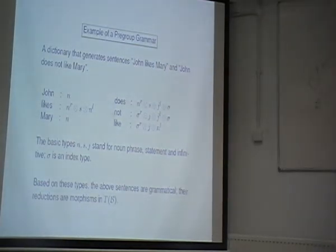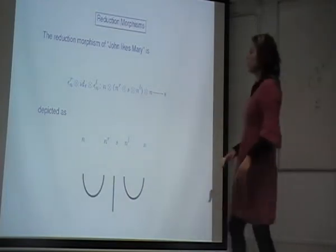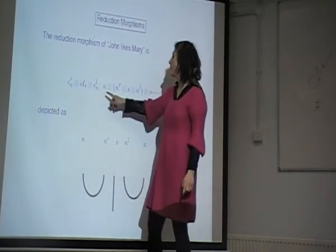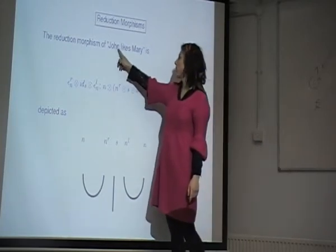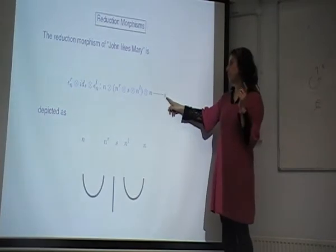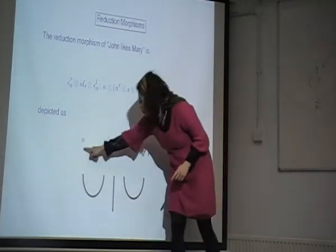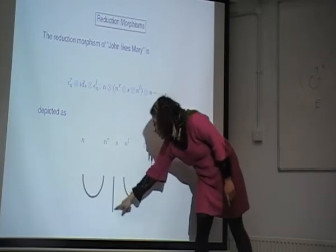One generates the free dictionary based on these given types. Is the sentence 'John likes Mary' grammatical? Yes, because I have this morphism: epsilon times id times epsilon that sends the tensor product of the types of John, likes, Mary to s, which was the distinguished element of my pregroup grammar. Here is the diagram for it. I'm going to cut n and n^r by epsilon, and then n^l and n by epsilon, and do nothing in the middle.